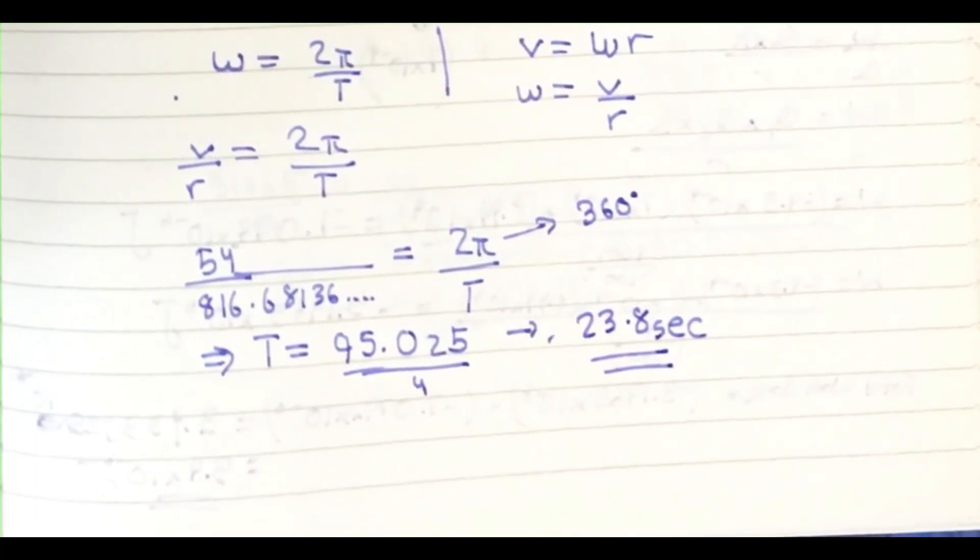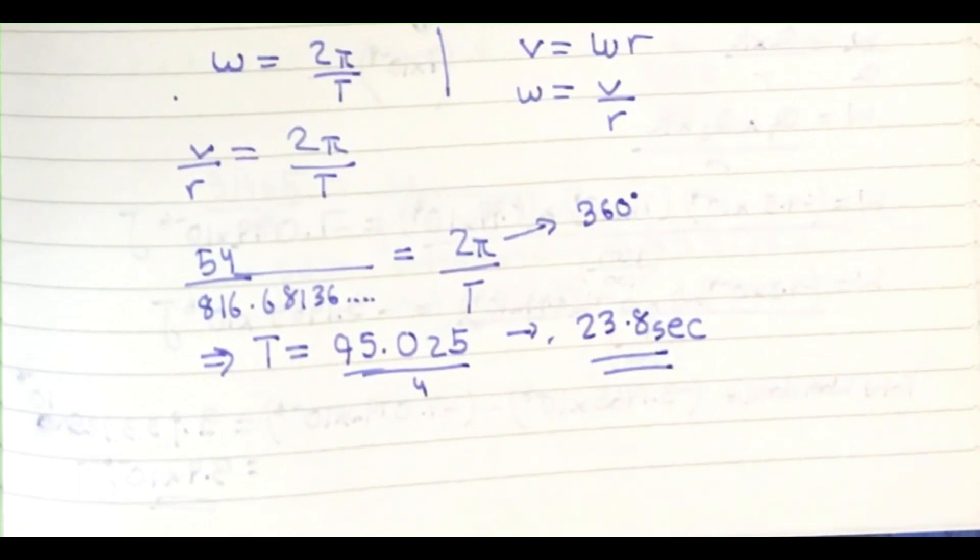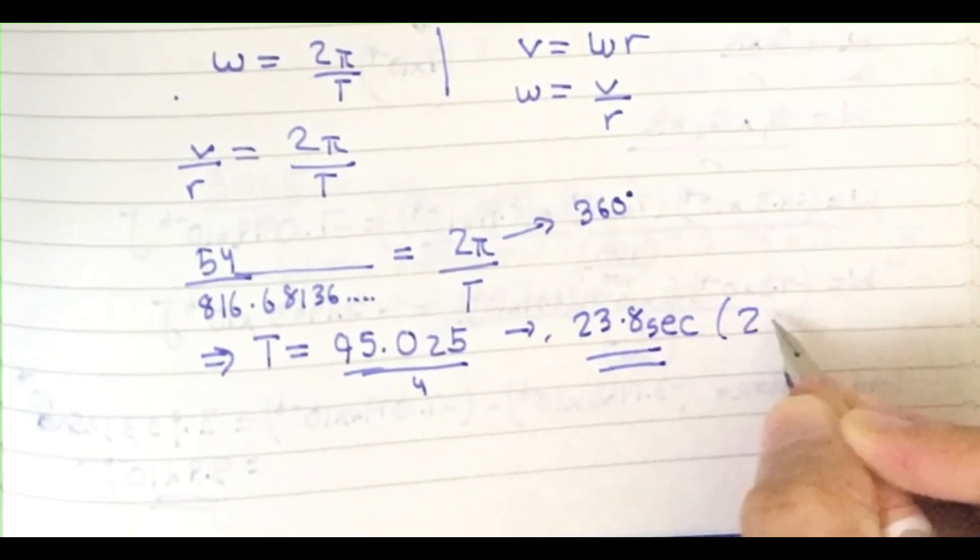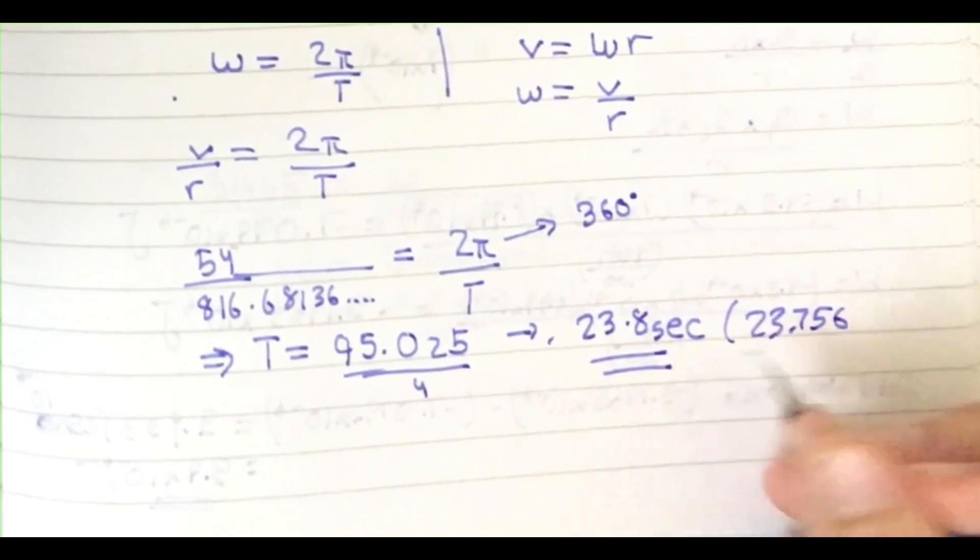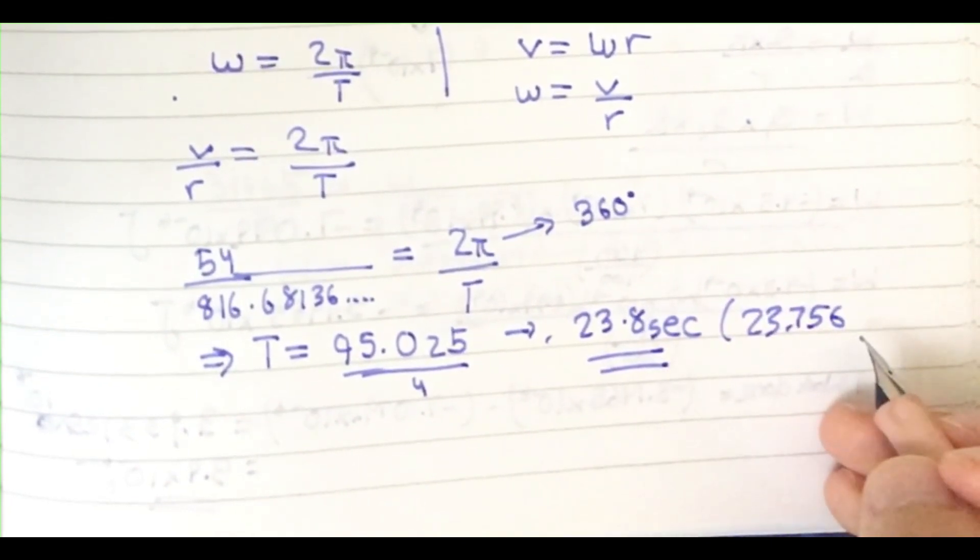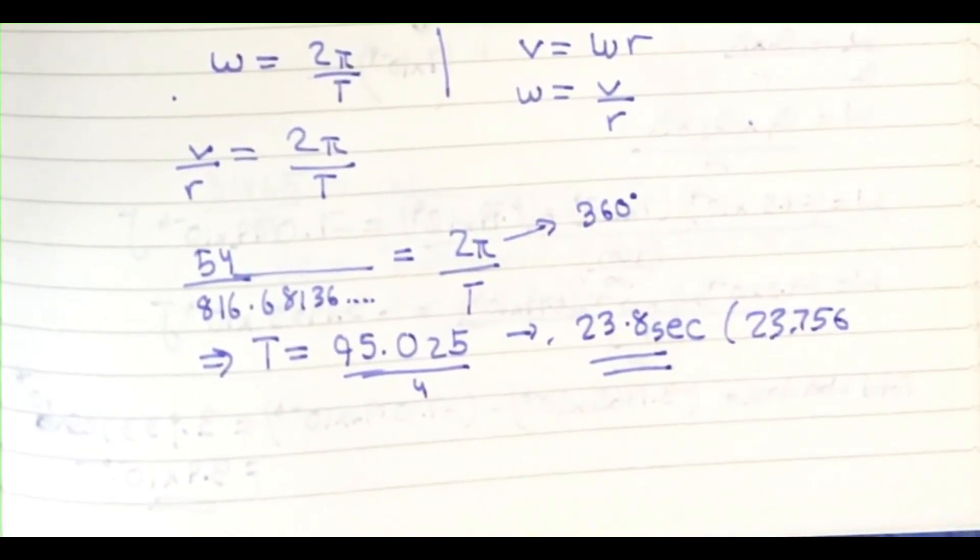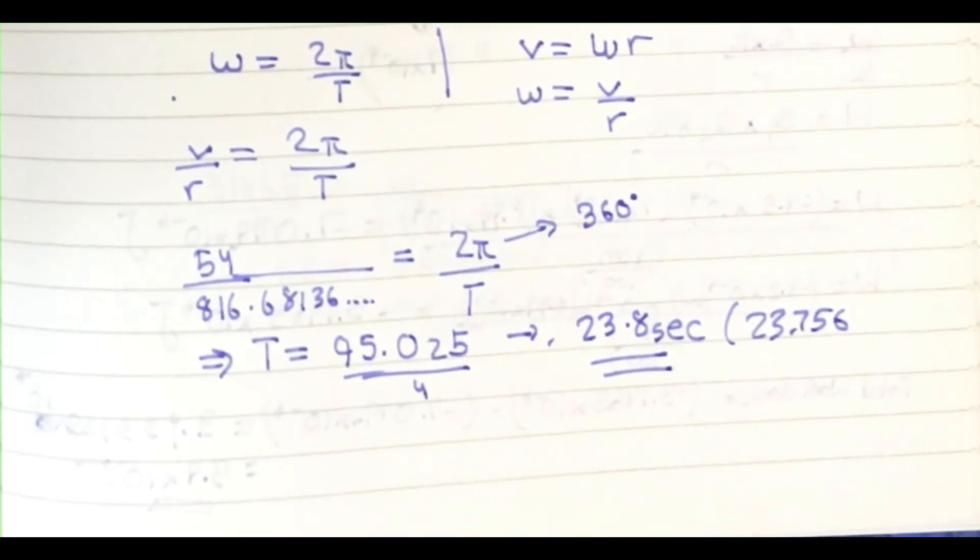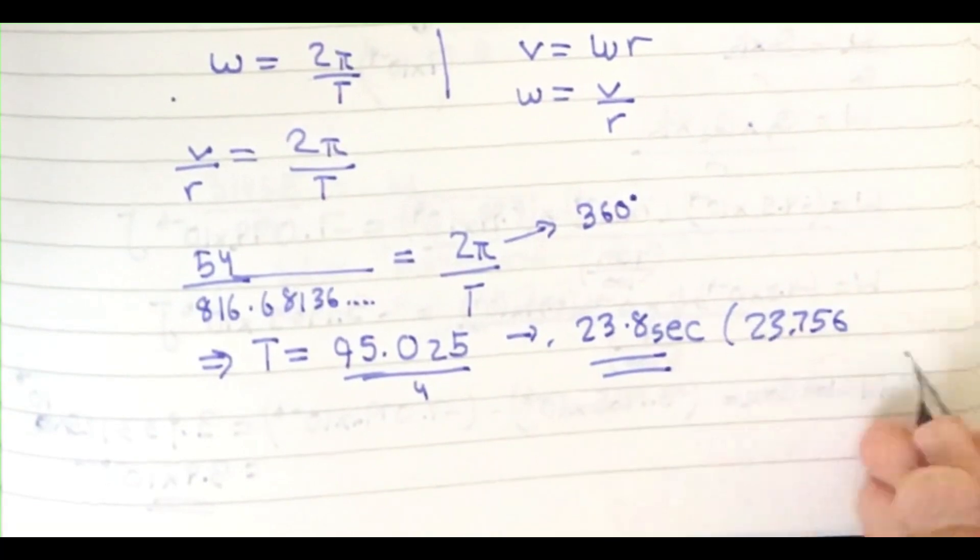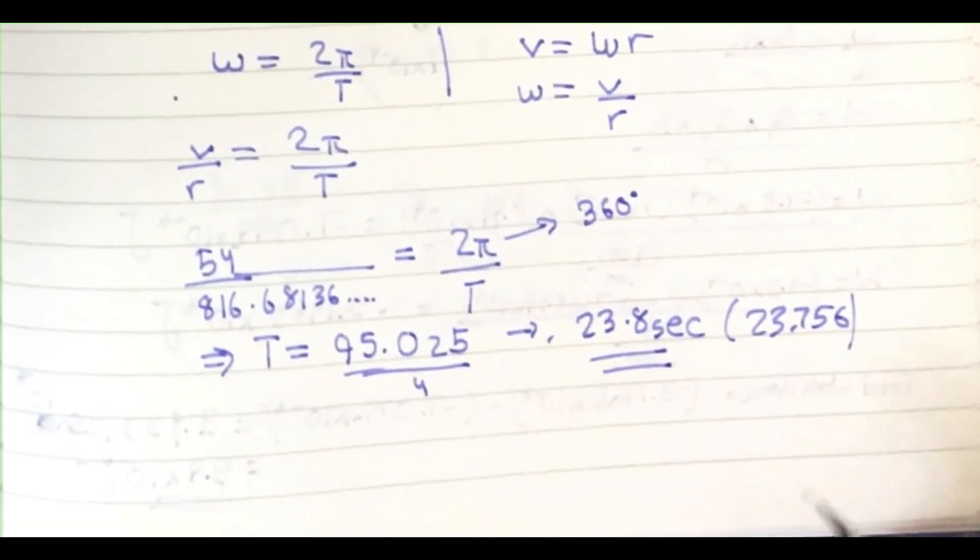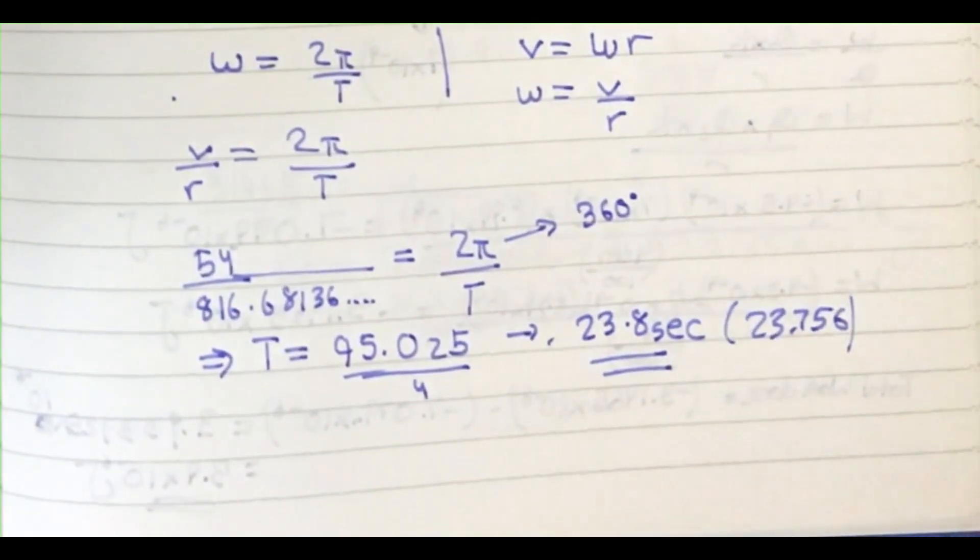The final answer is 23.756, which you can round off as 23.8, or you can make it 24 as well. It depends because I don't see any specified decimal places in the question. You can write either way. This is your final answer.